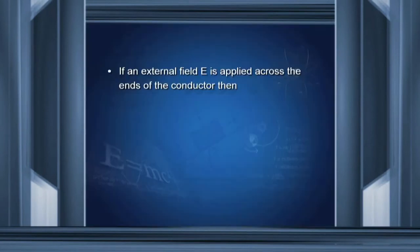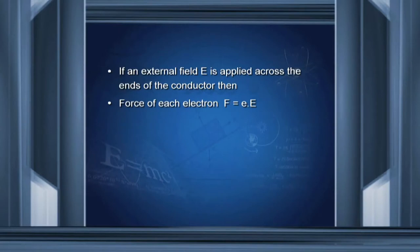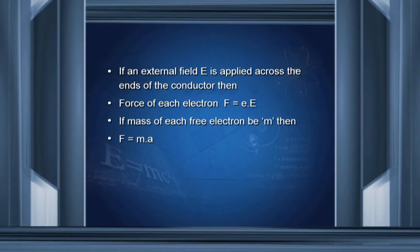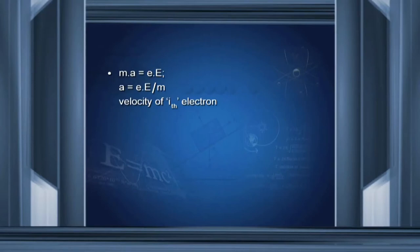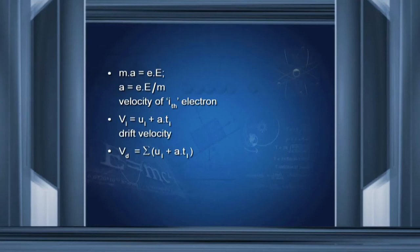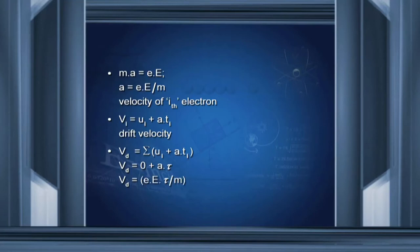If an external field E is applied across the ends of the conductor, then force on each electron F equals the charge of the electron multiplied by the electric field. If mass of each electron be m, then F equals mA. Newton's second law gives acceleration A equals eE divided by m. Velocity of the ith particle using the first equation of motion: vi = ui + A·ti. So drift velocity vd equals A·τ, where τ is the relaxation time. Substituting the value of acceleration A, we get vd = eEτ/m.